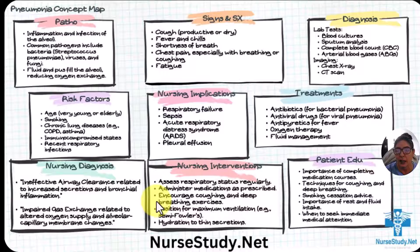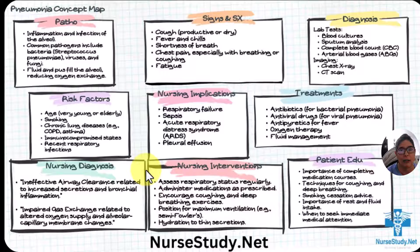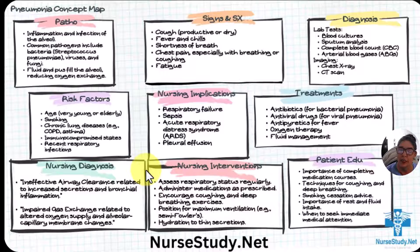Nursing interventions include assessing respiratory status regularly, administering medications as prescribed — antibiotics and antipyretics — and encouraging coughing and deep breathing exercises to get some of that phlegm out. Sometimes we can even percuss the back if they can tolerate it. Warm showers with steam can also help them cough more easily. Position for maximum ventilation — semi-Fowler's is probably best so they're not gurgling. And hydration to thin the secretions.